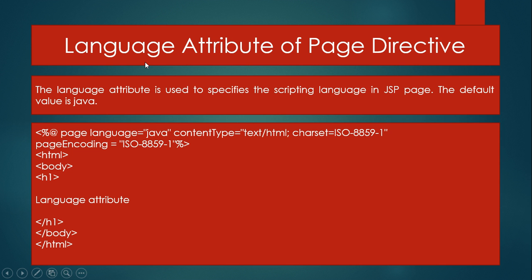In this slide, we will discuss the language attribute of the page directive. The language attribute is used to specify the scripting language in the JSP page. The default value is Java. Here, the language attribute of the page directive is shown passing Java as the value.